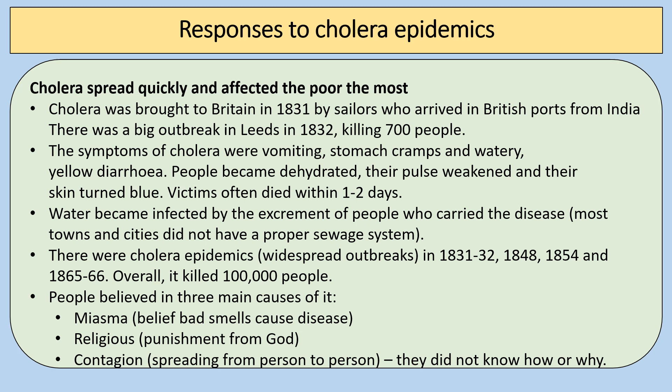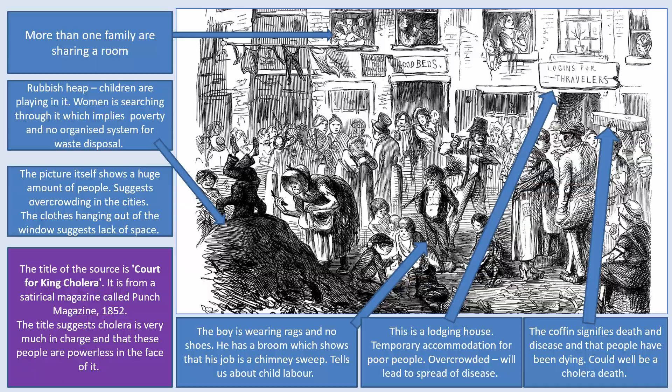You need a case study of cholera epidemics. Cholera spread quickly and affected the poor the most. It was brought to Britain in 1831 by sailors arriving from India, with a big outbreak in Leeds in 1832 killing 700 people. Symptoms included vomiting, stomach cramps, watery yellow diarrhoea, dehydration, weakened pulse, and skin turning blue — people often died within two days. Water became infected by the excrement of carriers, causing further spread. There were cholera epidemics in 1831–32, 1848, 1854 and 1865–66, killing 100,000 people overall. Cholera outbreaks ended once there were improvements in public health.